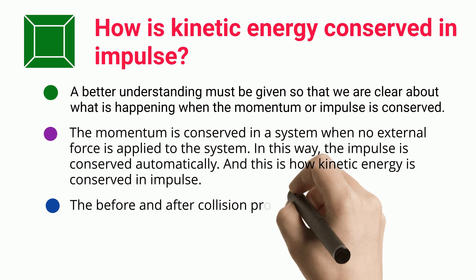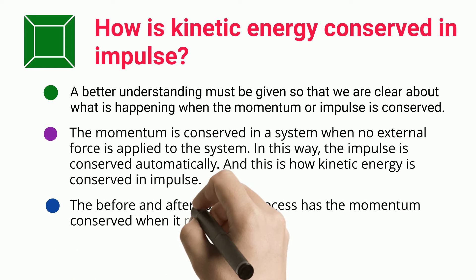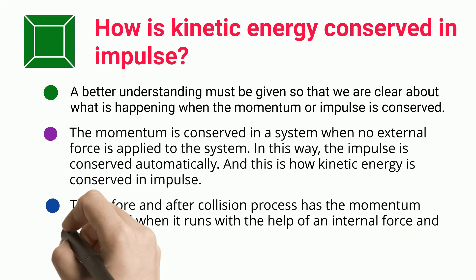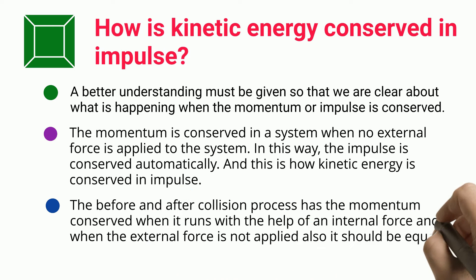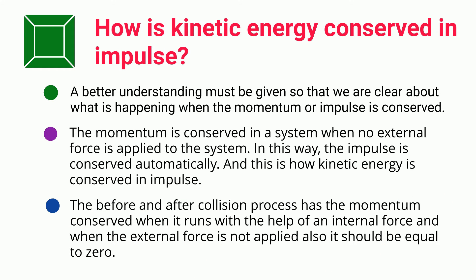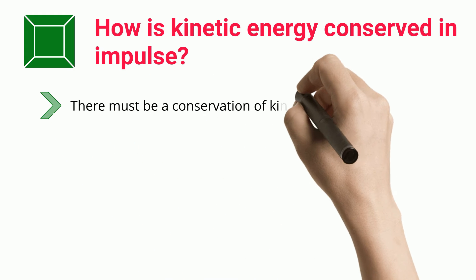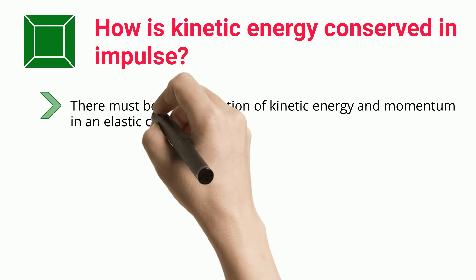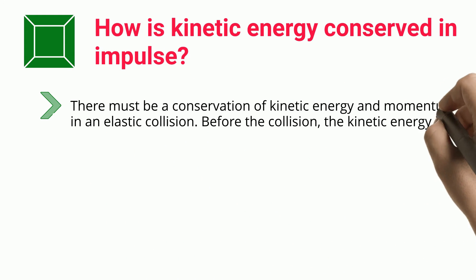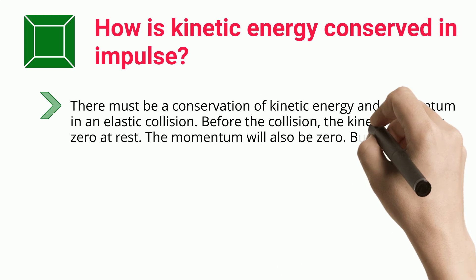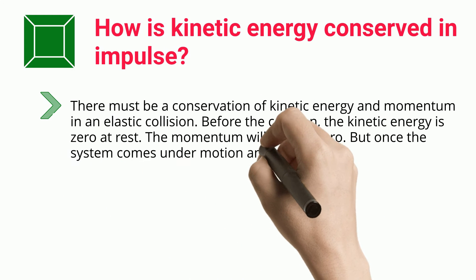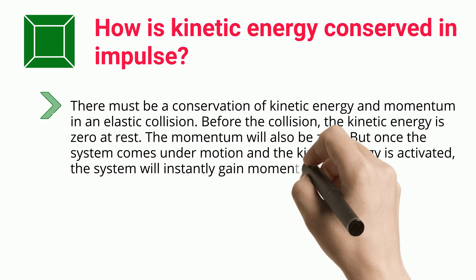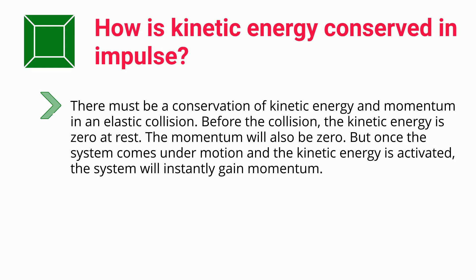The before and after collision process has the momentum conserved when it runs with the help of an internal force, and when the external force is not applied it should be equal to zero. There must be a conservation of kinetic energy and momentum in an elastic collision. Before the collision, the kinetic energy is zero at rest and the momentum will also be zero. But once the system comes under motion and the kinetic energy is activated, the system will instantly gain momentum.